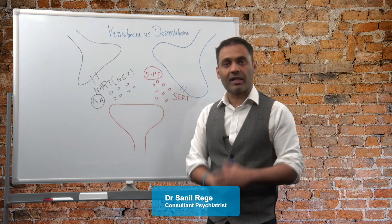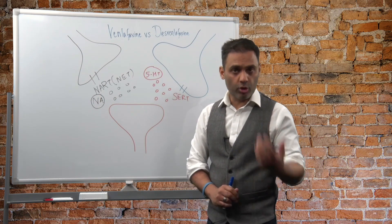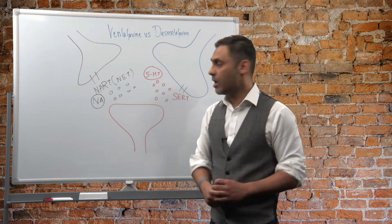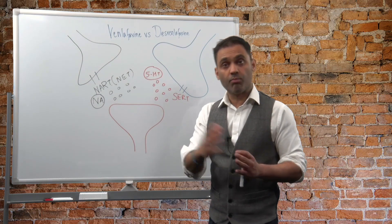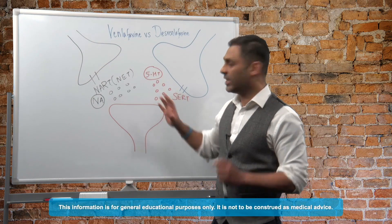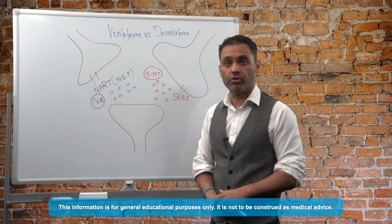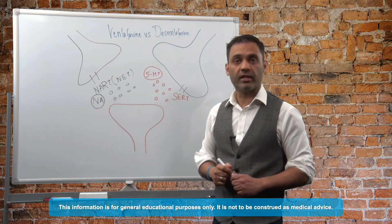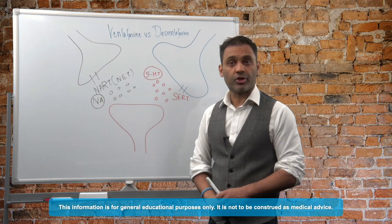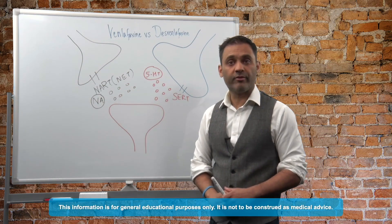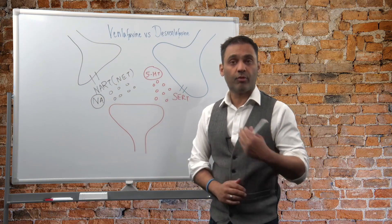Now both of these are classified as SNRIs, which basically mean serotonin, norepinephrine or noradrenaline reuptake inhibitors. Essentially what they do is they block the SERT, the protein that takes serotonin into the presynaptic neuron. By blocking it there's lots of serotonin available in the synaptic cleft to act on the postsynaptic receptors. Similarly they block what's called NART or NET, norepinephrine transporter. So therefore there's lots of noradrenaline available in the synaptic cleft for its action.